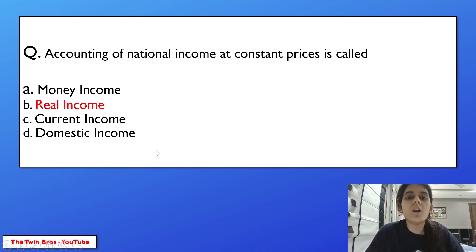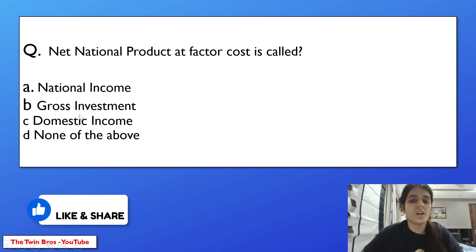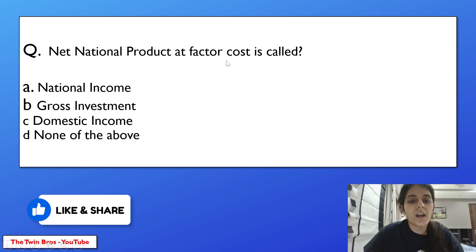Next question: accounting of national income at constant prices is called — money income, real income, current income, or domestic income? The answer is real income, option B.